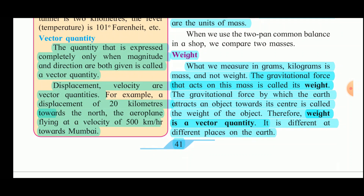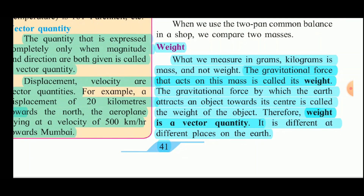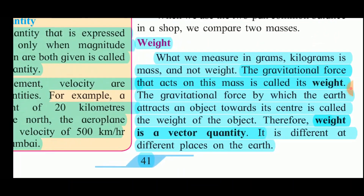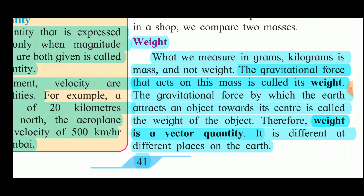What we measure in grams and kilograms is the mass and not the weight. The gravitational force that acts on this mass is called the weight. This gravitational force is the force by which the earth attracts an object towards its center. Therefore, weight is a vector quantity. It is different at different places on the earth, and it decreases as we go to higher altitudes from the surface of the earth. Naturally, when the gravitational force changes, the weight of an object also changes from place to place.